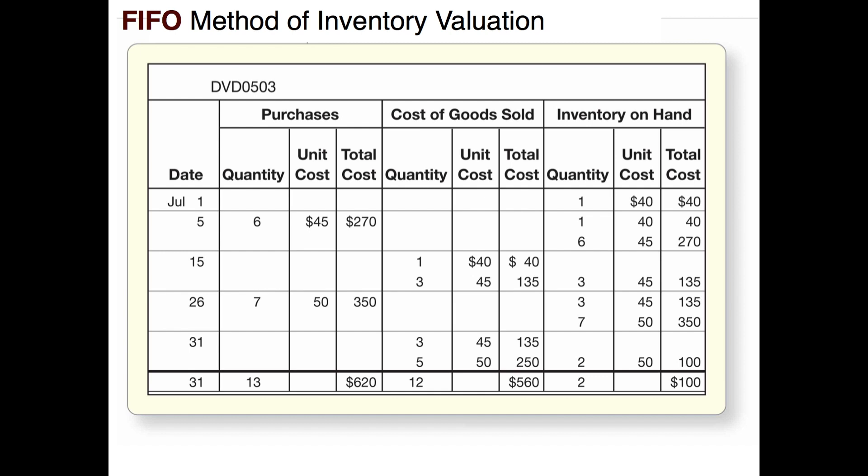Then on July the 5th we bought six more items of this same product. But as prices tend to do, they are increasing, so now we're paying $45 a piece for each of those six items for a total cost of $270. Scrolling over to our inventory on hand, we still have that one unit from beginning inventory at $40 and now six more items at $45 each, for a total ending inventory of $310.